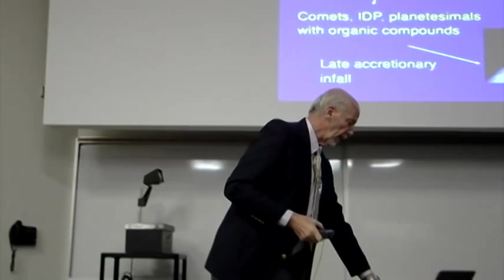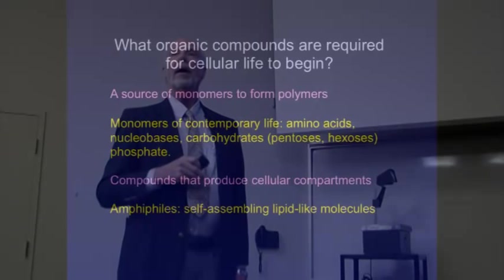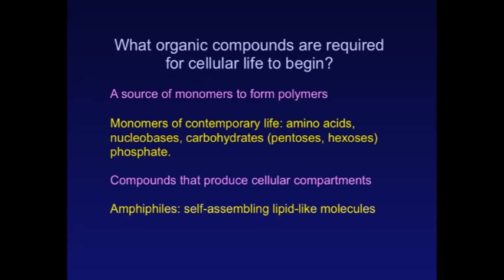What organic compounds do we need to begin life? The parts list is pretty simple. We need a source of monomers to form polymers: amino acids that form proteins, nucleotides that form nucleic acids. Those had to be there to start up life. You also have to have compounds that produce cellular compartments — and there's that word again: amphiphiles. These are self-assembling, lipid-like molecules. You're going to watch them assemble all by themselves — that's what I mean by self-assembly.